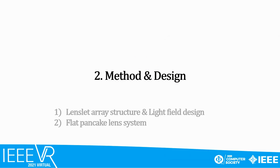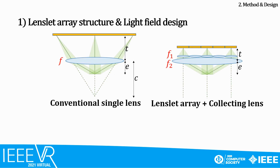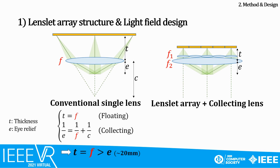Our design can be explained as a combination of the lens lid array structure and the flat pancake lens system. While the conventional VR has a single lens per each eye, our design has a lens lid array and the lens which are attached together. In a conventional VR system, the single lens has to simultaneously perform two functions: floating the image to a far distance and collecting the light to the user's eye.